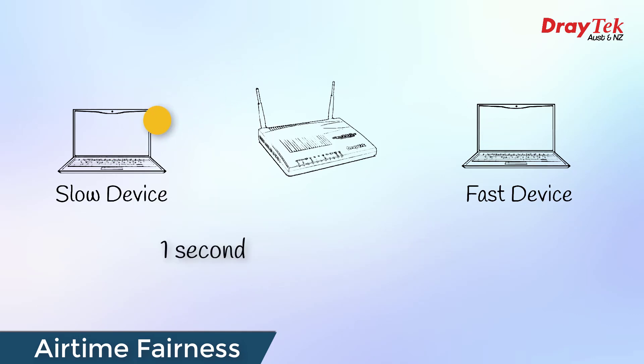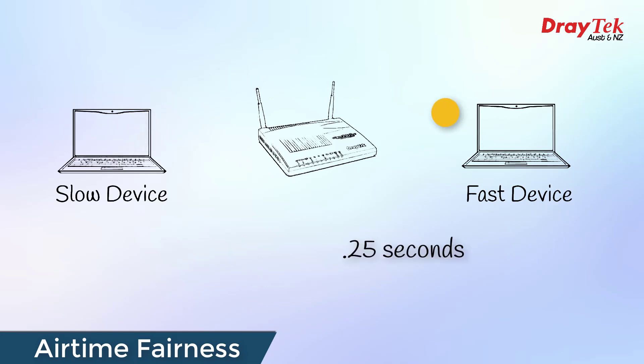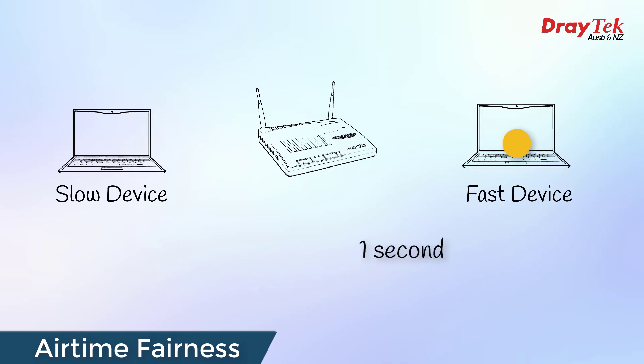But if we change it to a time-based share of the bandwidth and each device gets the same amount of time to download as much as it can, the faster device can now download four packets during its turn instead of just one.